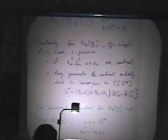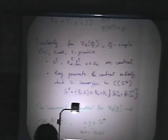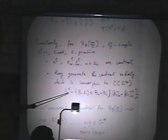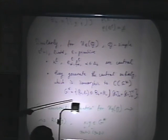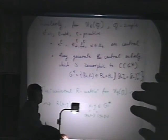If you take U_q(G), specialize it to a root of unity, it's known that first the L-th powers of these elements are central; second they generate the central subalgebra which is isomorphic to the algebra of polynomial functions on the so-called dual Poisson-Lie group G-star. This is the Cartan part of the elements. The spectrum of the whole center is a finite cover of G-star. So over generic points on G-star the corresponding representations are reducible, but if you fix a point on the cover you get an irreducible representation everywhere except some special variety. The identity in this group is the most singular point.